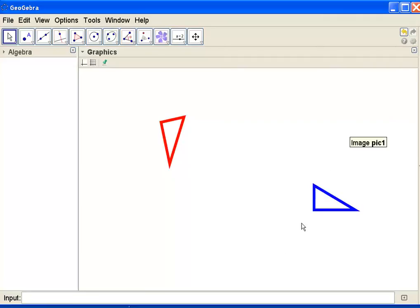What I'd like to do is set up a series of transformations that pass one triangle on top of the other. I think I'm going to try to move the blue triangle on top of the red triangle.